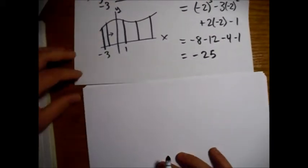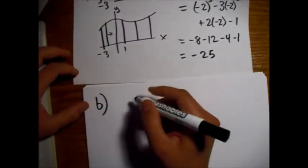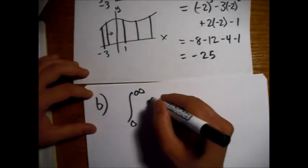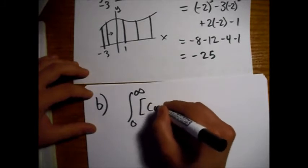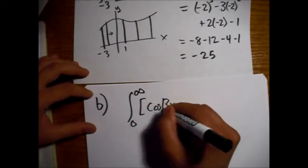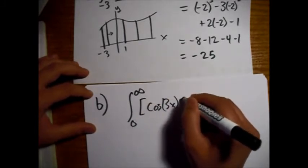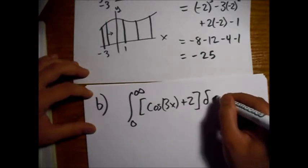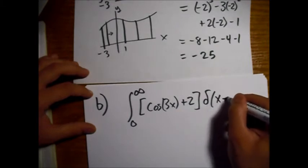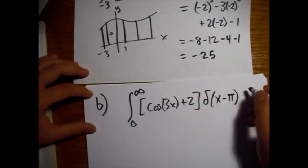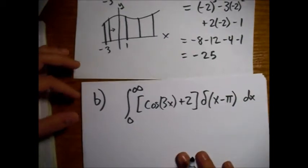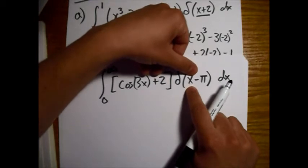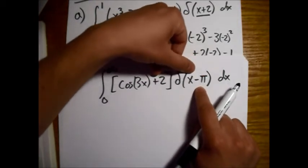Alright, on to the second one. We're integrating from 0 to infinity of cosine of 3x plus 2, and the Dirac delta function is of x minus pi. So, first we ask ourselves, where does this equal 0? It equals 0 at x equals pi.